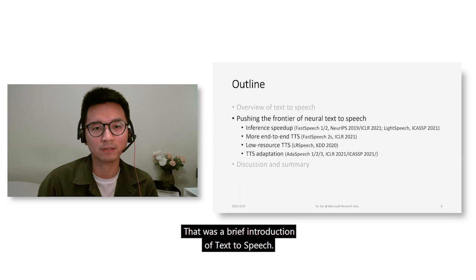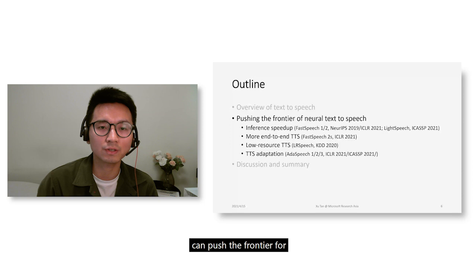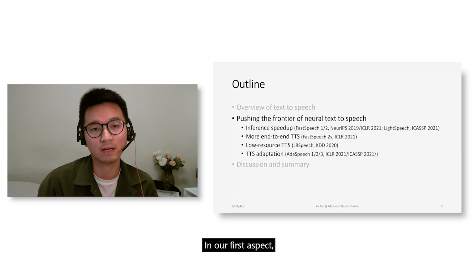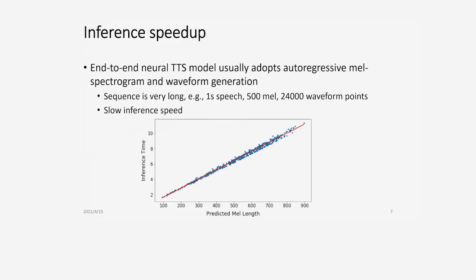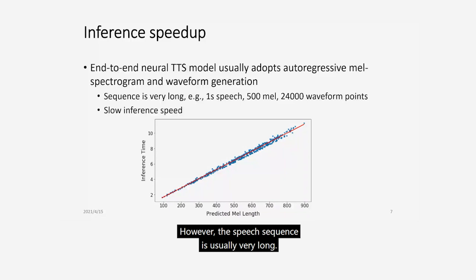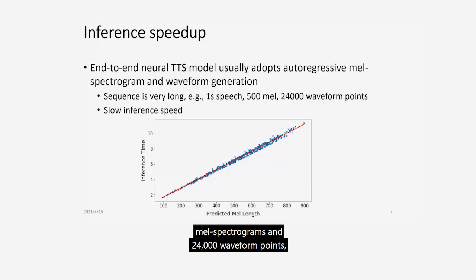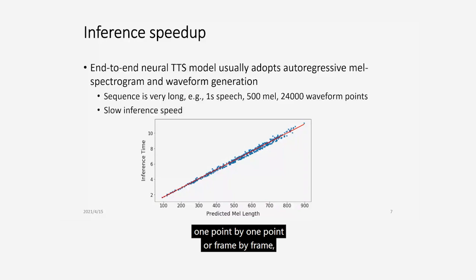Now let's go to the second part, where we introduce our research work to push the frontier of neural text-to-speech. The first aspect is speeding up inference. Neural TTS models typically use autoregressive mel spectrogram and waveform generation. However, speech sequences are very long — for one second of speech there are typically 500 frames of mel spectrogram and 24,000 waveform points. This makes autoregressive frame-by-frame generation very slow.